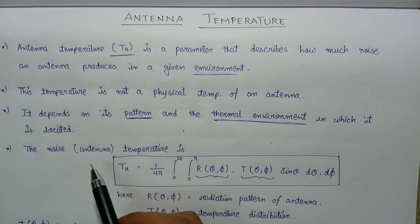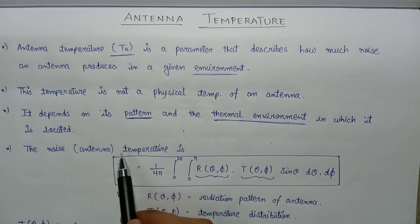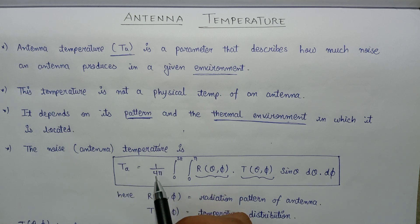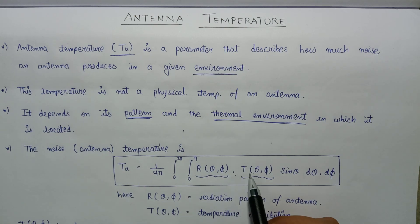If we talk about the mathematical expression for the antenna temperature, it will be given by T of A where T of A equals 1 over 4 pi, integration from 0 to 2 pi of R of theta phi in multiplication with T of theta phi in multiplication with sin theta d theta and d phi.